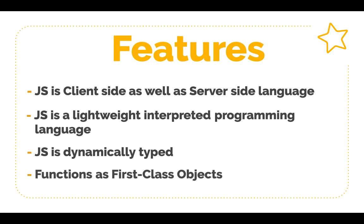Functions in JavaScript are first-class objects. They have properties and methods just like any other object. Functions can be passed as arguments in other functions, and they can also be thrown as exceptions.